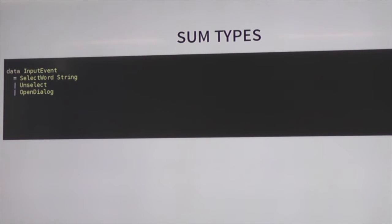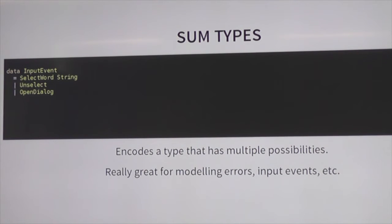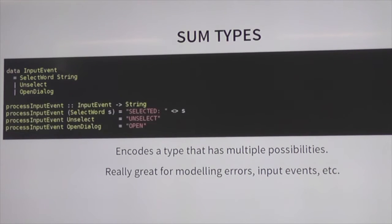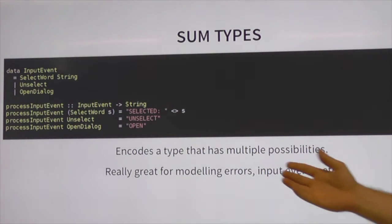A really cool thing I need in pretty much every programming language now: sum types. It's the ability to have a type that has multiple choices in it. That's pretty boring by itself — you could just have an abstract class and inherit. But it's really useful for modeling errors and input events and stuff where you have a whole bunch of choices that you'd like to encode in a closed way in your program. The difference is: I want to model every possible error that can happen in my program, have that set be closed, so I don't have to wonder whether I can have this error or that error.